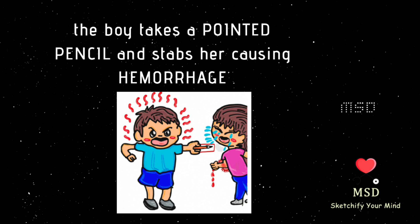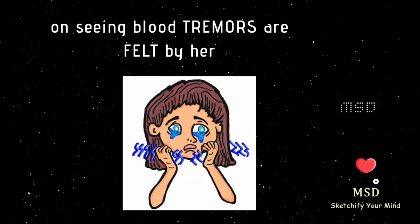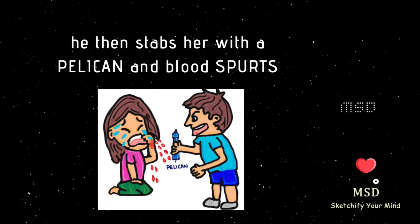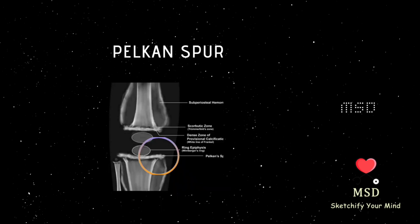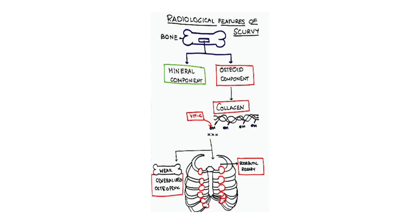Blood — hemarthrosis and subperiosteal hemorrhage. On seeing her blood, tremors are felt by her — Trümmerfeld zone. He then again stabs her firmly with the pelican and blood spurts — Pelikan spur. So now we are going to know why the radiological features of scurvy occur in bone.